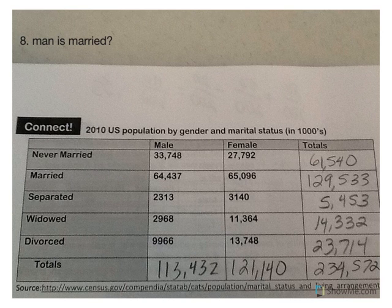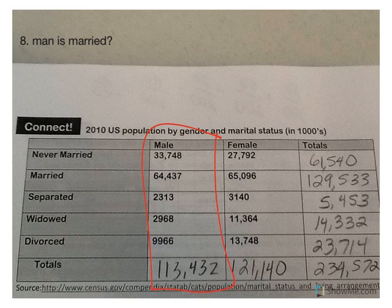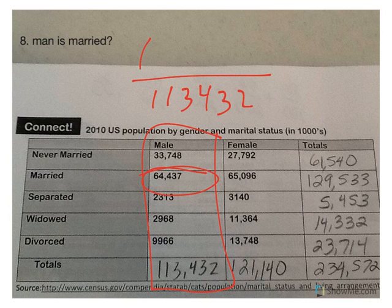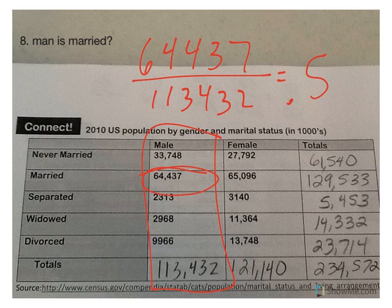Let's look at number eight: what is the probability a man is married? We're looking at the men, so that would be my denominator — all the men. My numerator would be the 64,437 married men. We end up with .568. So 56.8% of men are married.